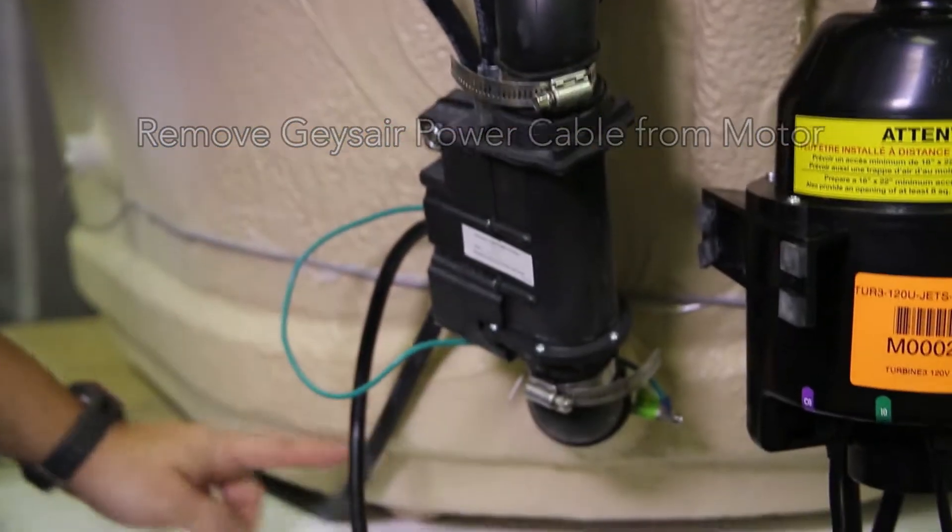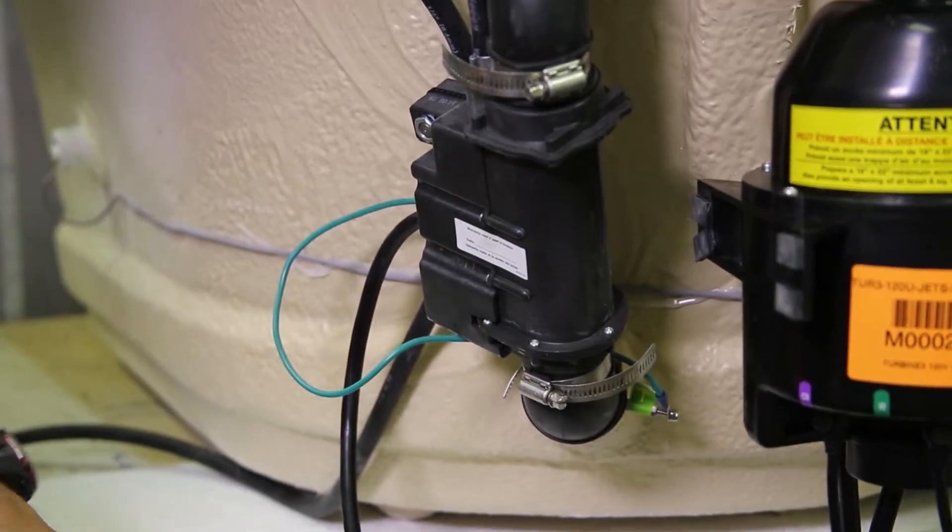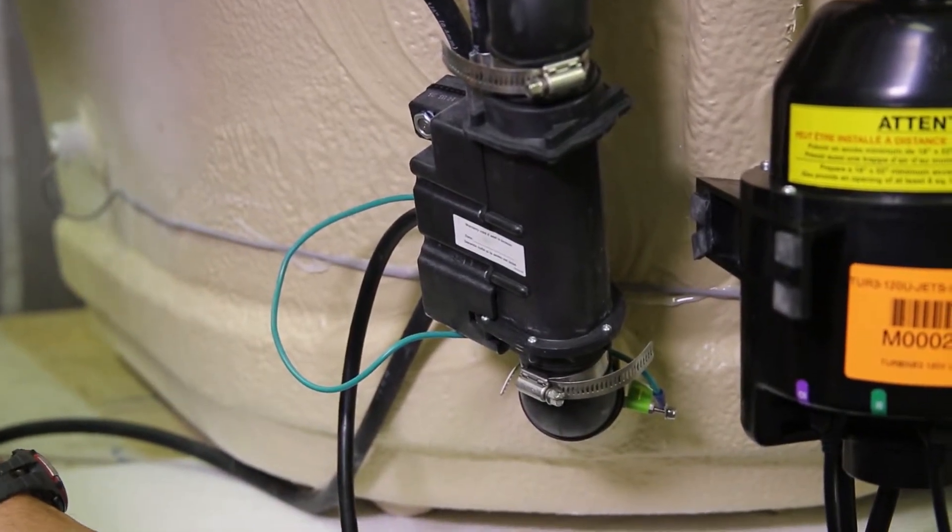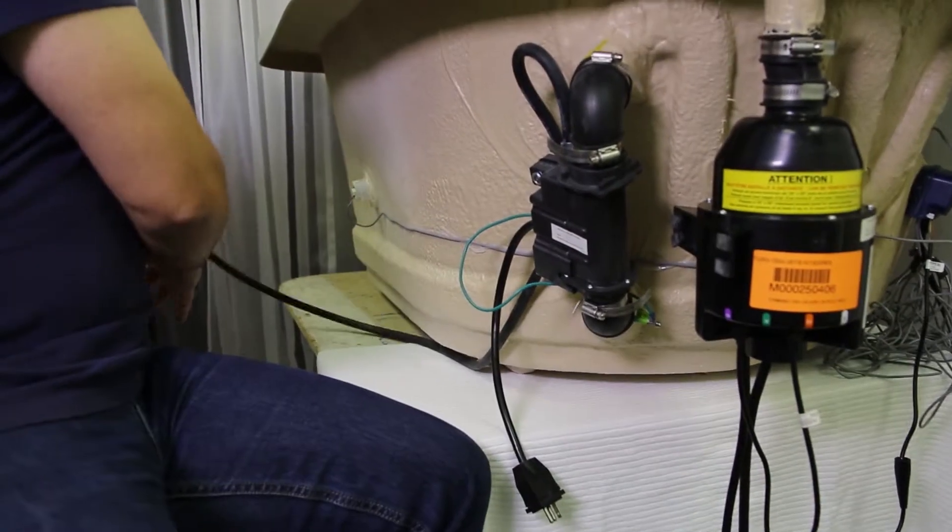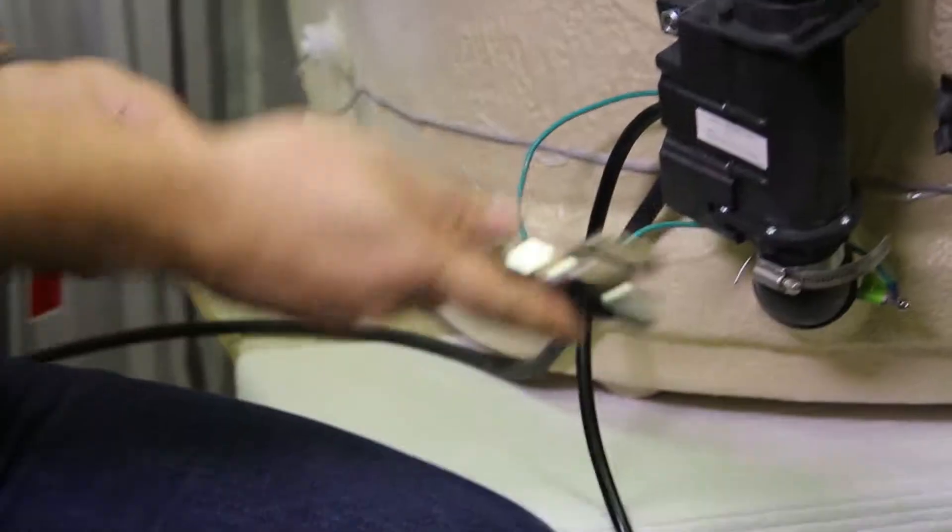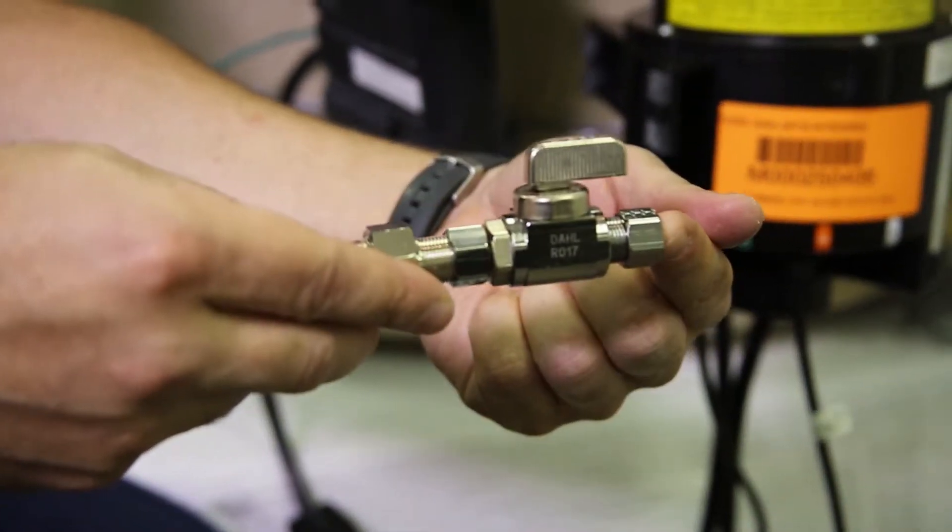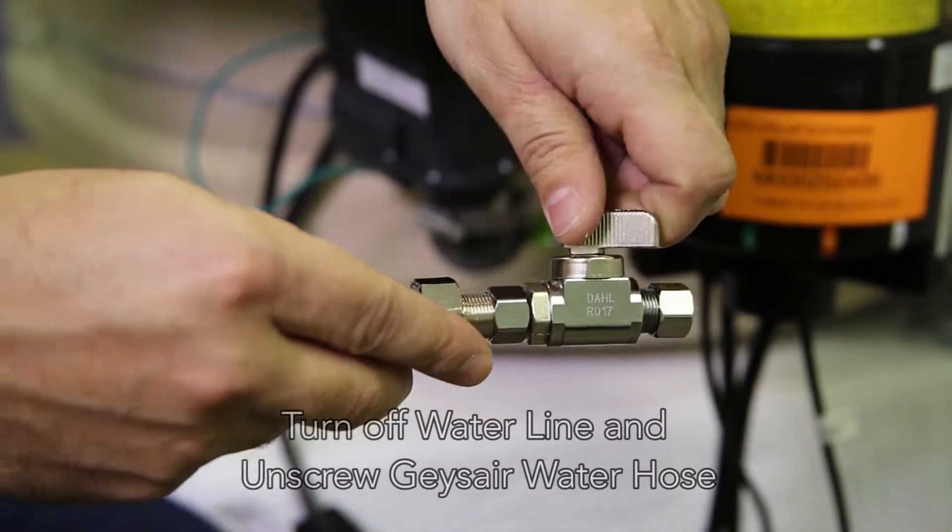Your hose is going to a hot water line. So what you need to do is, just for the purpose of the video, I have a valve, a ball valve here. This would be the water going in. You have your valve here, so you would turn that off like that.